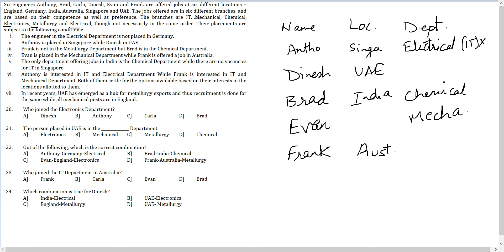And Frank. What was Frank interested in? Frank is interested in IT and mechanical. But he cannot get mechanical. Evan has got mechanical. So Frank will get IT now. Frank is getting IT now. Done.